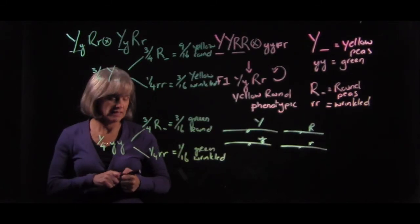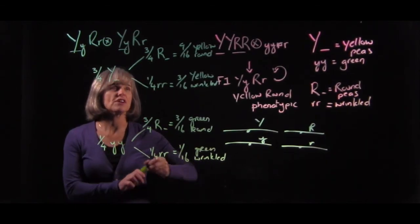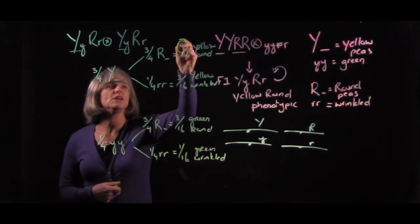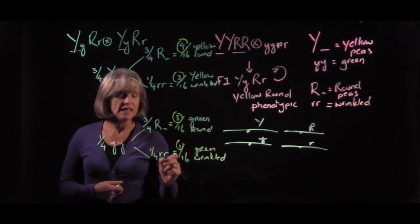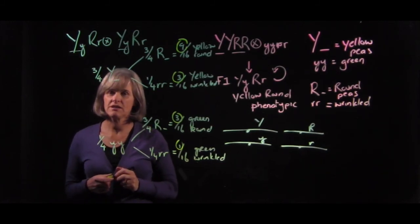So you can see that the final proportions are as we would expect. We get that 9-3-3-1 ratio and we have figured it out with the branch diagram.